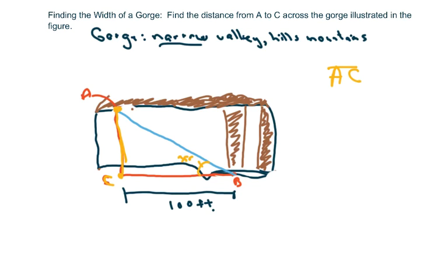We know that we're given that, according to the picture, that this is 35 degrees, this angle here. And the length from B to C, or B to C, is 100 feet.